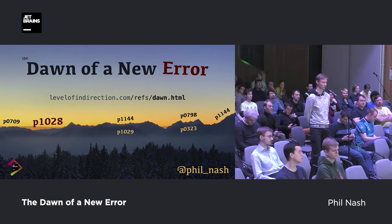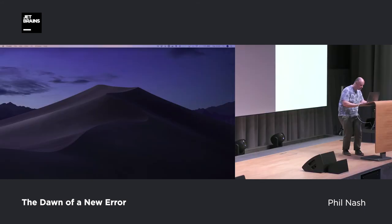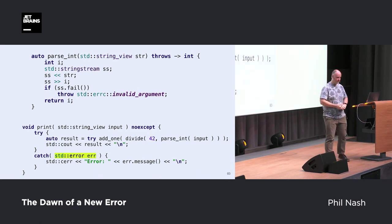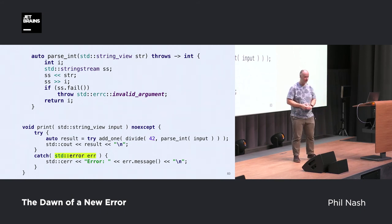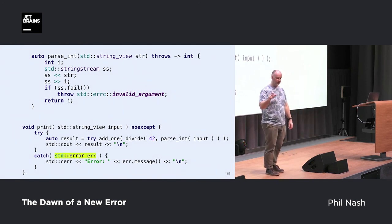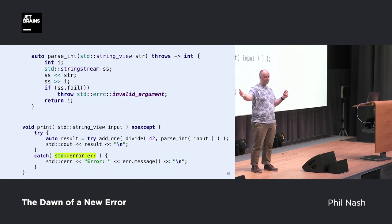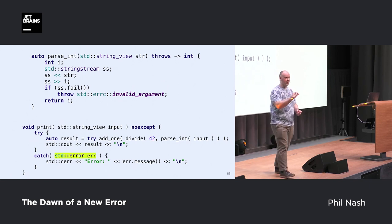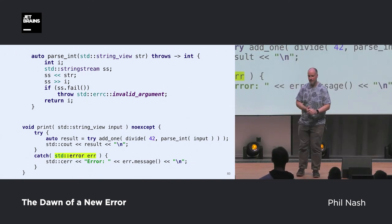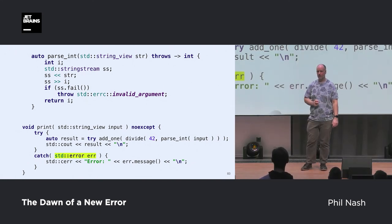Question about slide 83: in the line where we assign try add_one, why do we use the try operator only once? Good catch. This is called a try expression, and it applies to the whole expression — which could be a compound expression. You don't have to put try in front of every call that may throw, only in front of the expression that may yield an error. So you should only see it once per line, if at all.